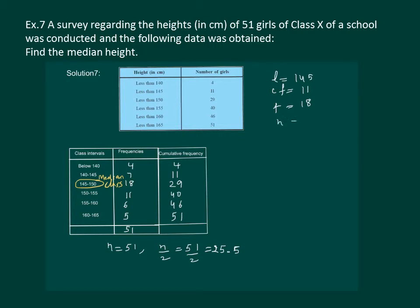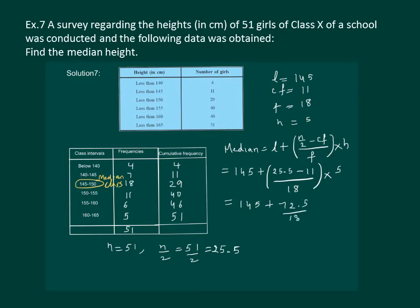We can see from the table. H is the class size, which is 5. Now substitute in the formula and find the value of the median. 145 plus n by 2 is 25.5 minus cf is 11 whole by 18 into 5, which is equal to 145 plus 72.5 whole by 18, so the median is 149.03.